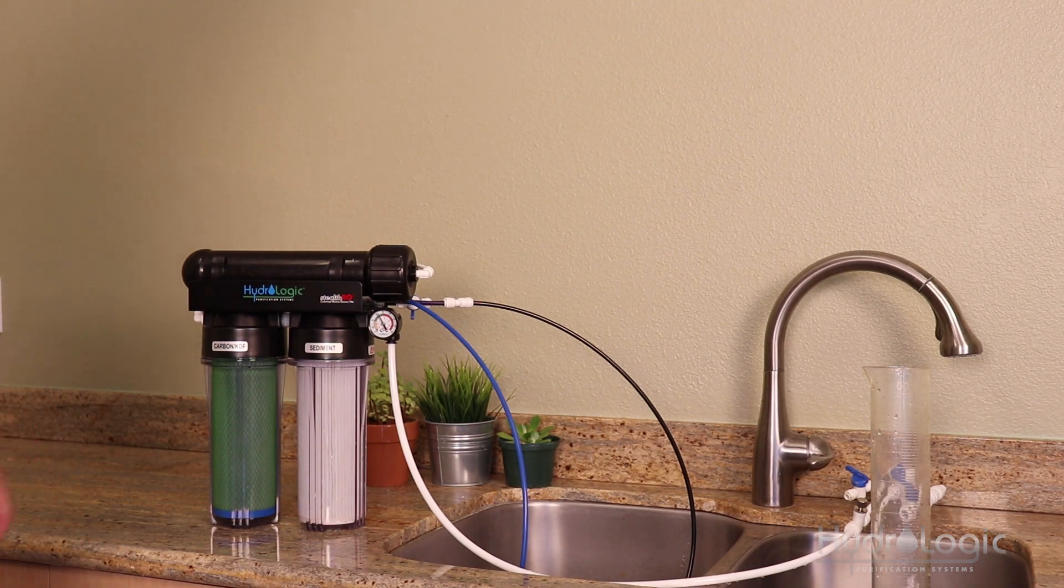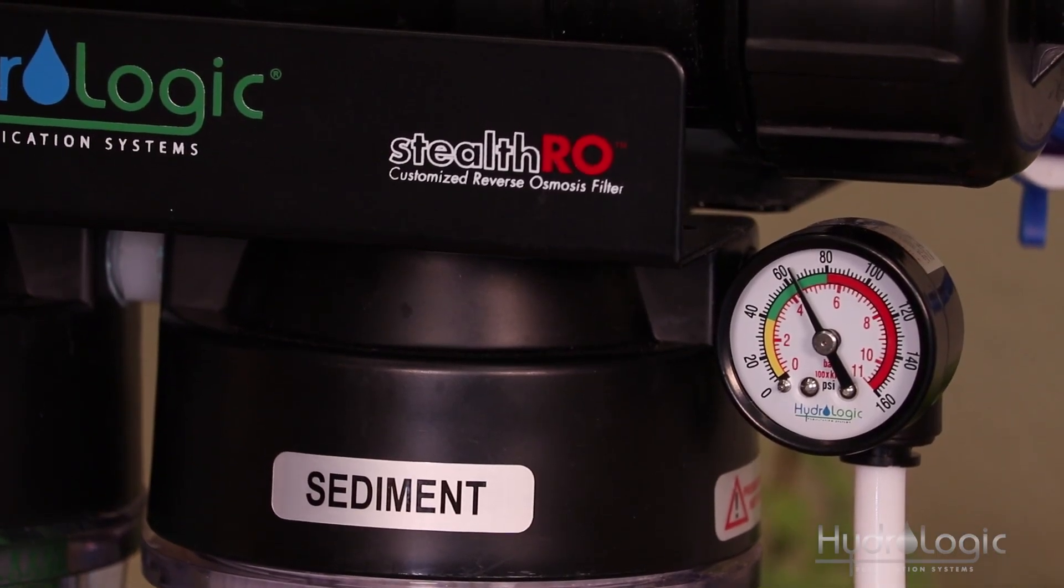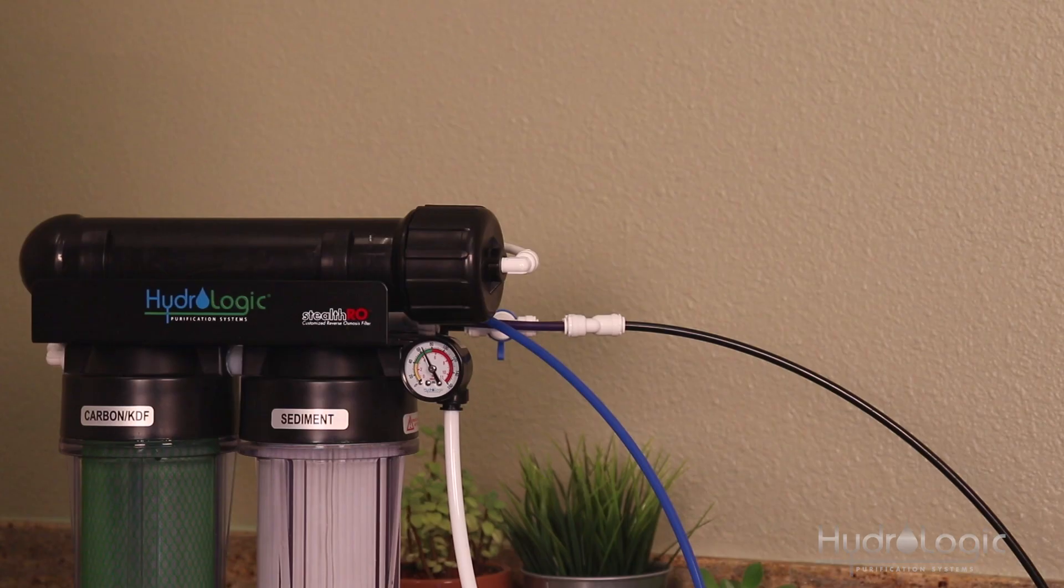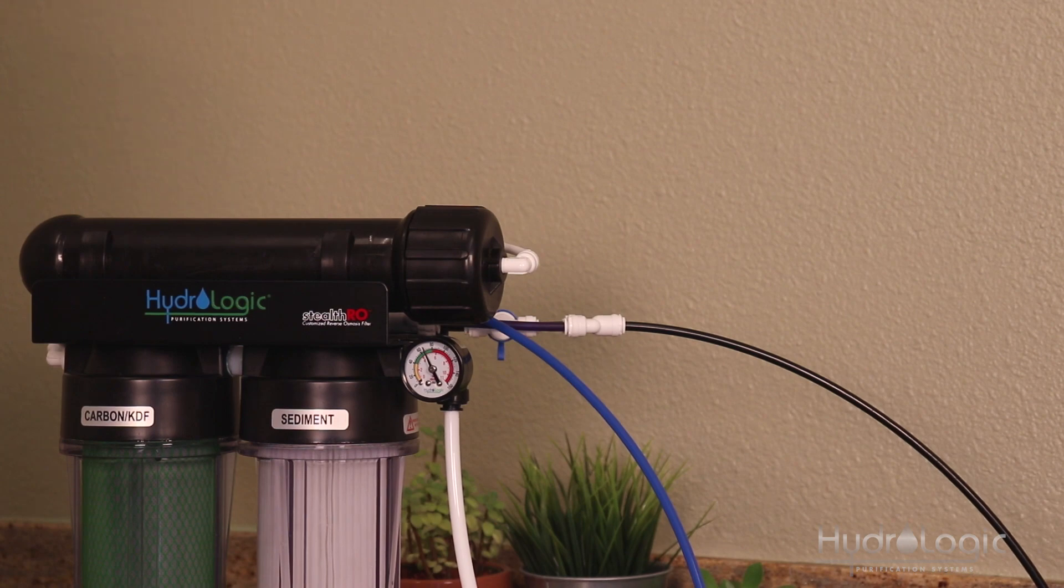Right here on our Stealth, we've got a good 65 PSI going steady. I took a measurement of the temperature of the incoming water earlier, and it's 73 degrees, 73, 74, wavering between the two. So we should get a really accurate flow rate today.